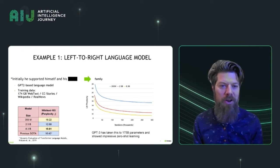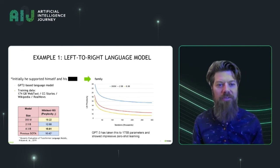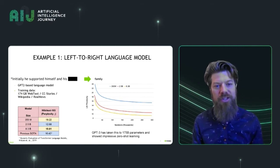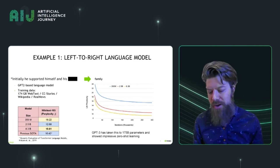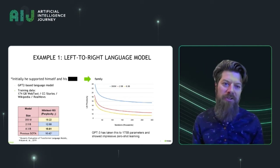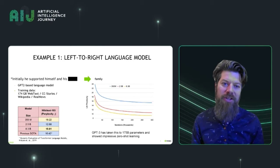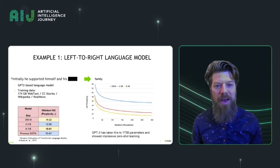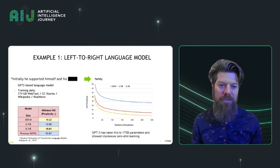These language models are very good at generation. They're very good at learning the structure of language and the meaning of language. And it turns out that when you train one of these very large language models on enormous databases — such as all the text that you can find on the Internet — these models start learning detailed associations about all of the different things in the world and how they relate to each other.